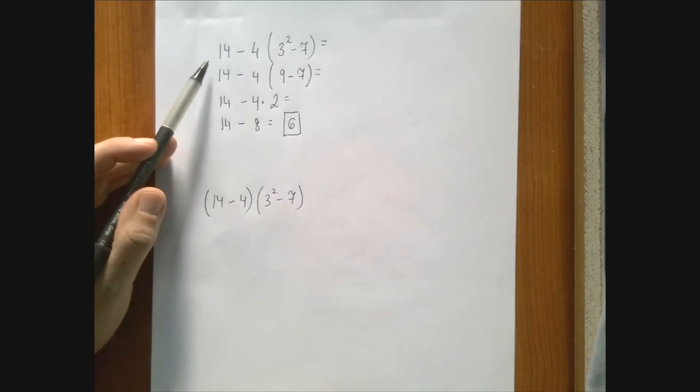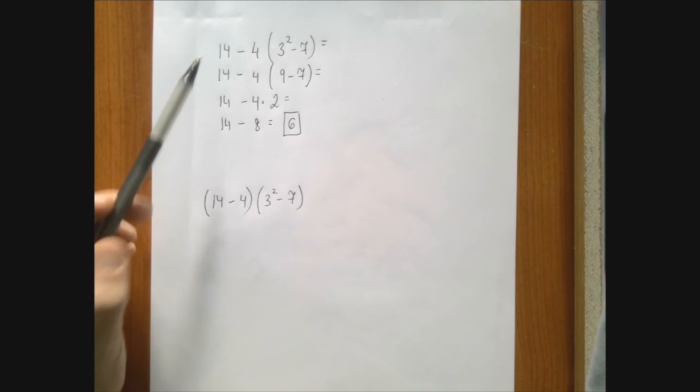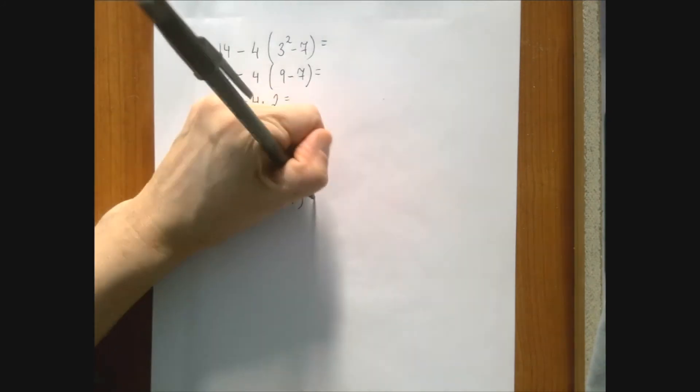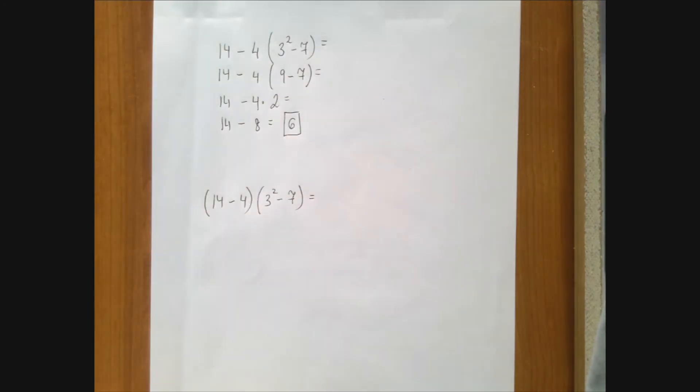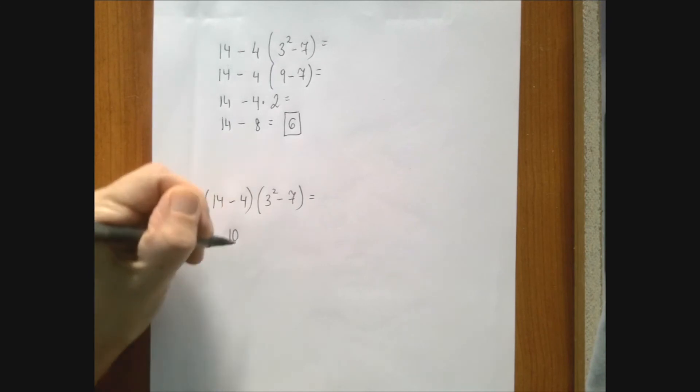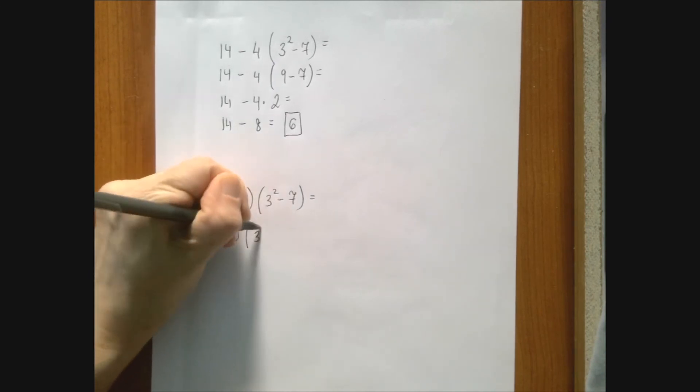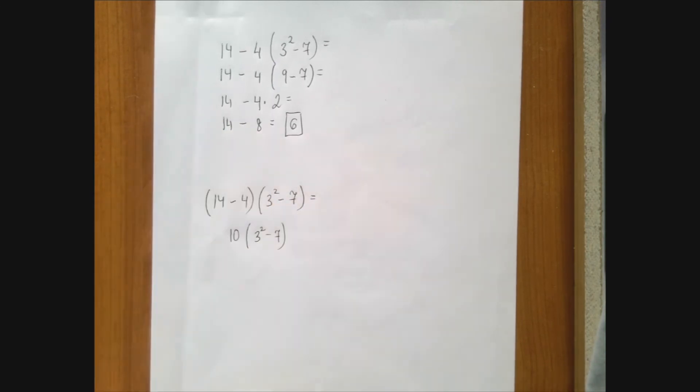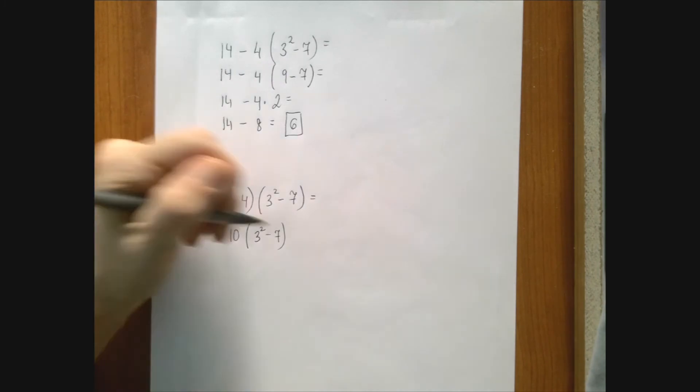From 14, we're not subtracting 4, we're subtracting 4 times whatever this is. So because there are two parenthesis, one after the other, we proceed left to right. In the first parenthesis, there is just a subtraction. So we have 10 times 3 squared minus 7.